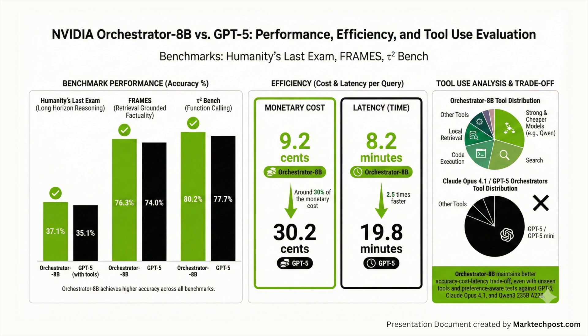In a setting with Basic, Specialized, and Generalist tools, Orchestrator 8B runs at about 9.2 cents and 8.2 minutes per query, compared with 30.2 cents and 19.8 minutes for GPT-5 — which the model card summarizes as around 30% of the monetary cost and 2.5 times faster.